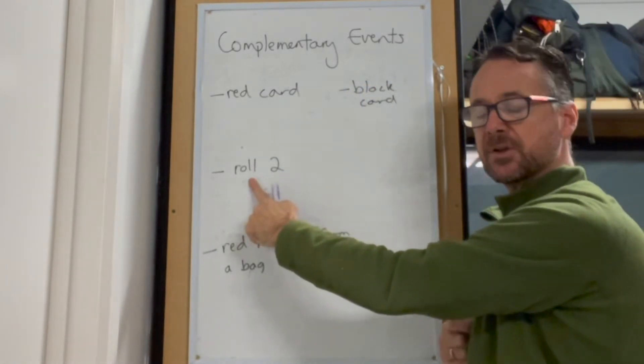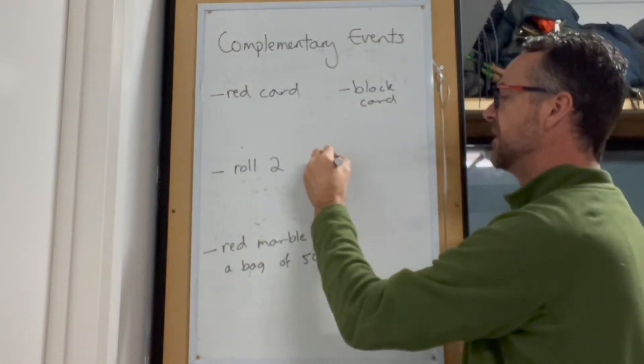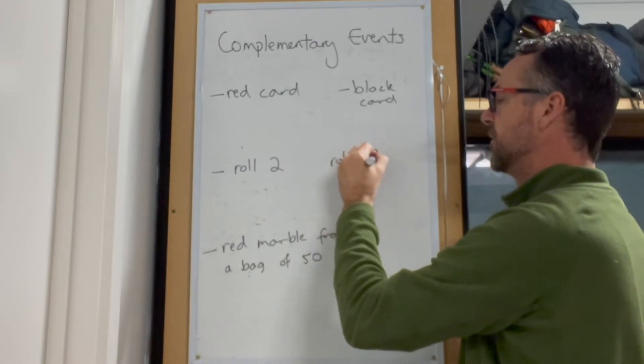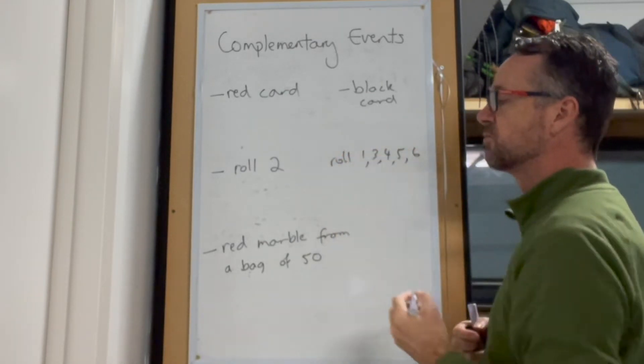If we want to roll a two on a dice, what would be the complementary event? And that would be rolling a one, three, four, five, or six.